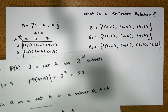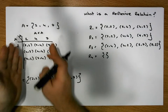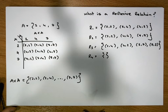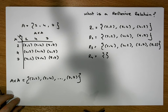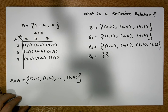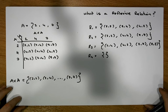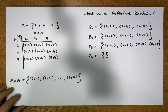We can select subsets from this set of nine elements in 512 unique ways, giving 512 relations. But we're only interested in certain relations out of those 512 — the rest we'll call boring relations. One of the types of relations we're interested in is reflexive relations.